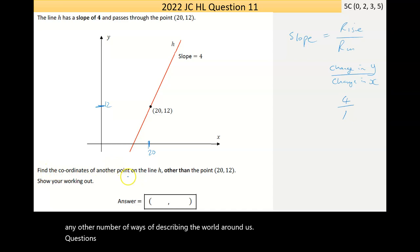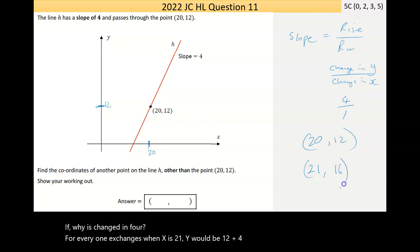The question says, find the coordinates of another point on the line h other than the point (20, 12). Now, if y is changing 4 for every one x changes, well, when x is 21, y would be 12 plus 4 is 16. And that's it. That's the answer.